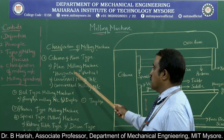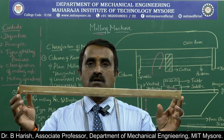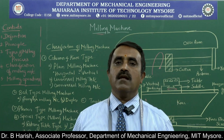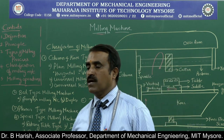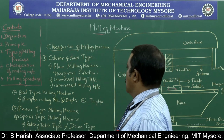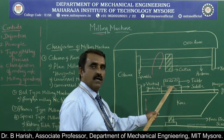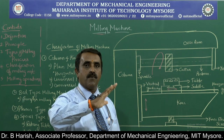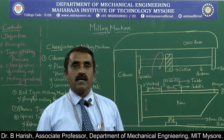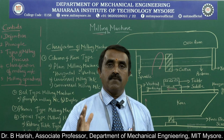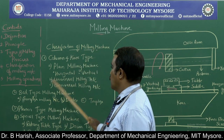If the spindle axis is horizontal, it is called horizontal milling machine; if the spindle is vertical, it is called vertical milling machine. The second type under column and knee is the universal milling machine, where the table can be moved 45 degrees on either side. If that provision exists, the milling machine is called a universal milling machine.